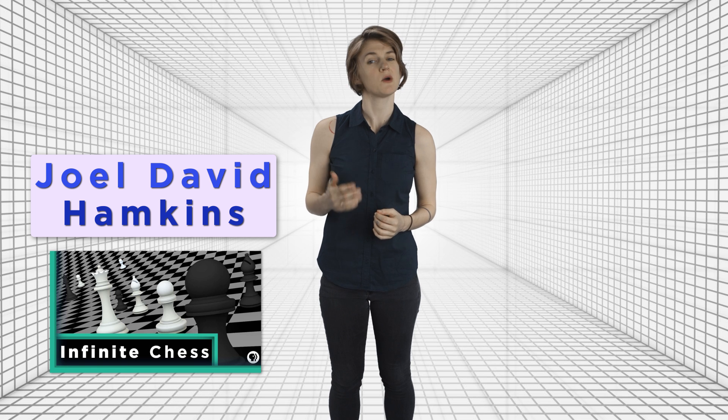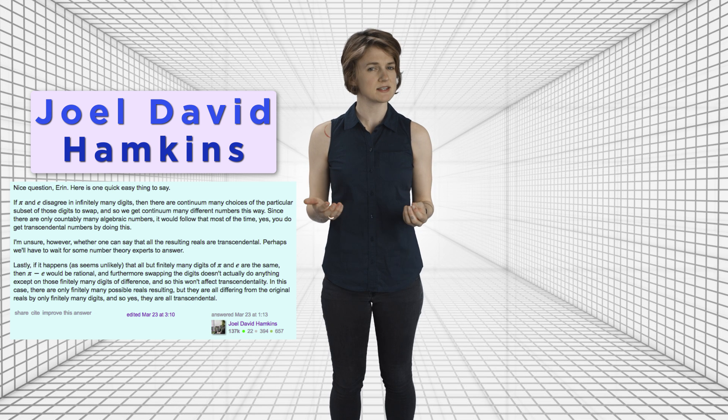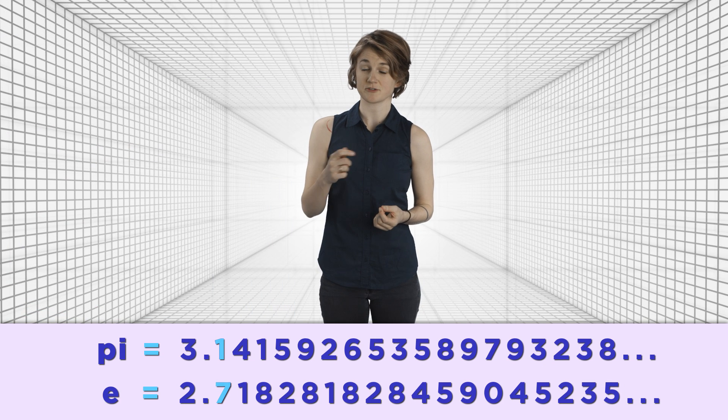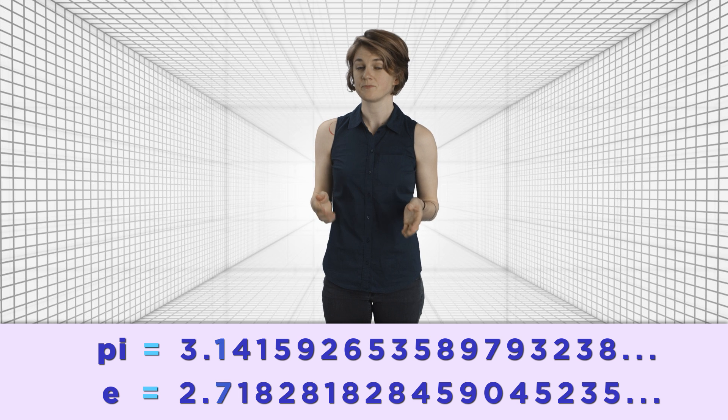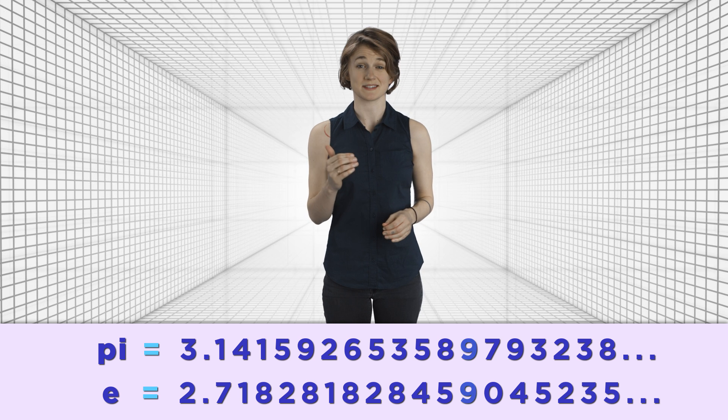Mathematician Joel David Hampkins, whose work we featured in the Infinite Chess episode, began his response to Carmody's question with a question of his own. How often do the digits of pi and e differ? As in, the first digit after the decimal place is different. It's 1 for pi and 7 for e. The second digit is different. It's 4 for pi and 1 for e. But the 12th digit is the same. It's 9 for both.